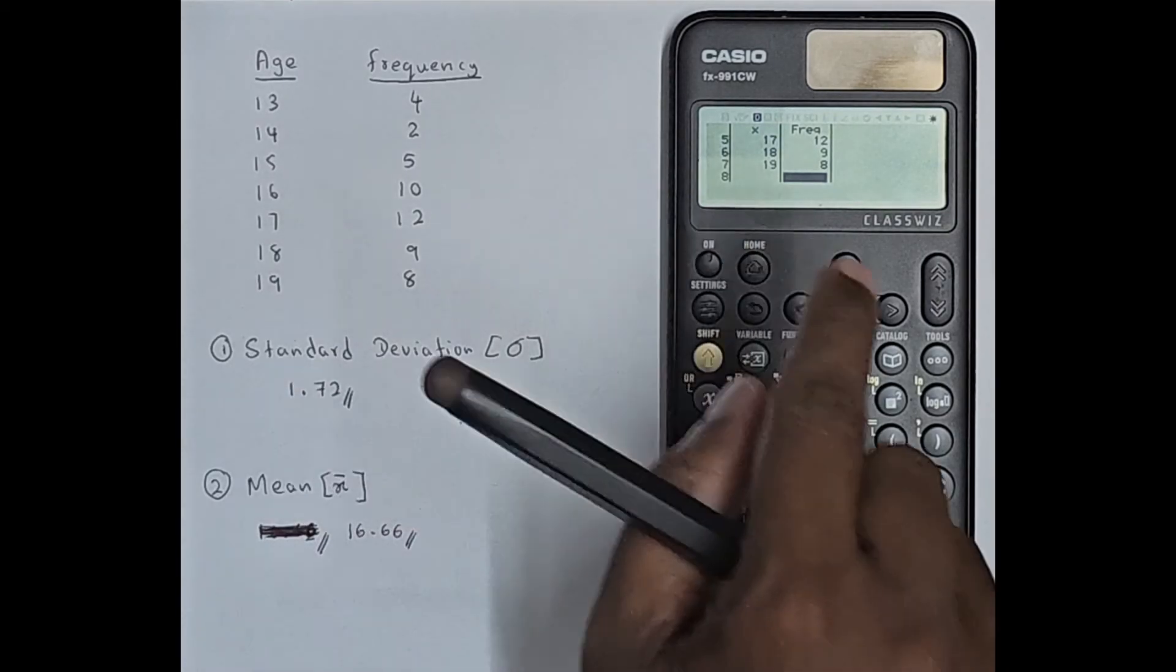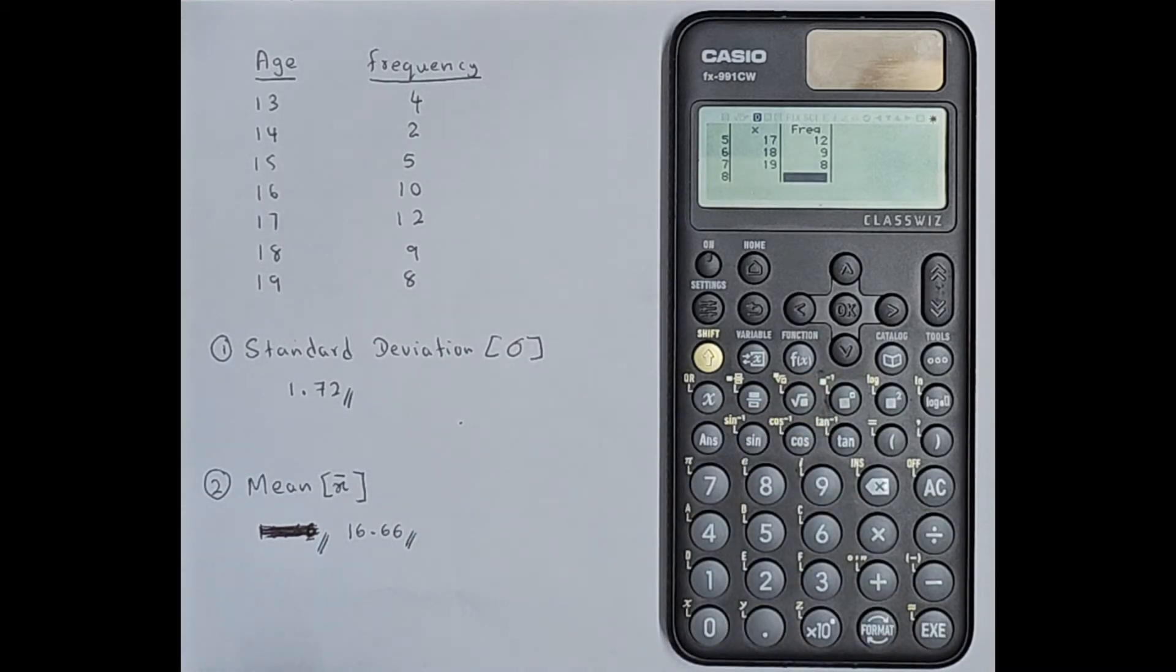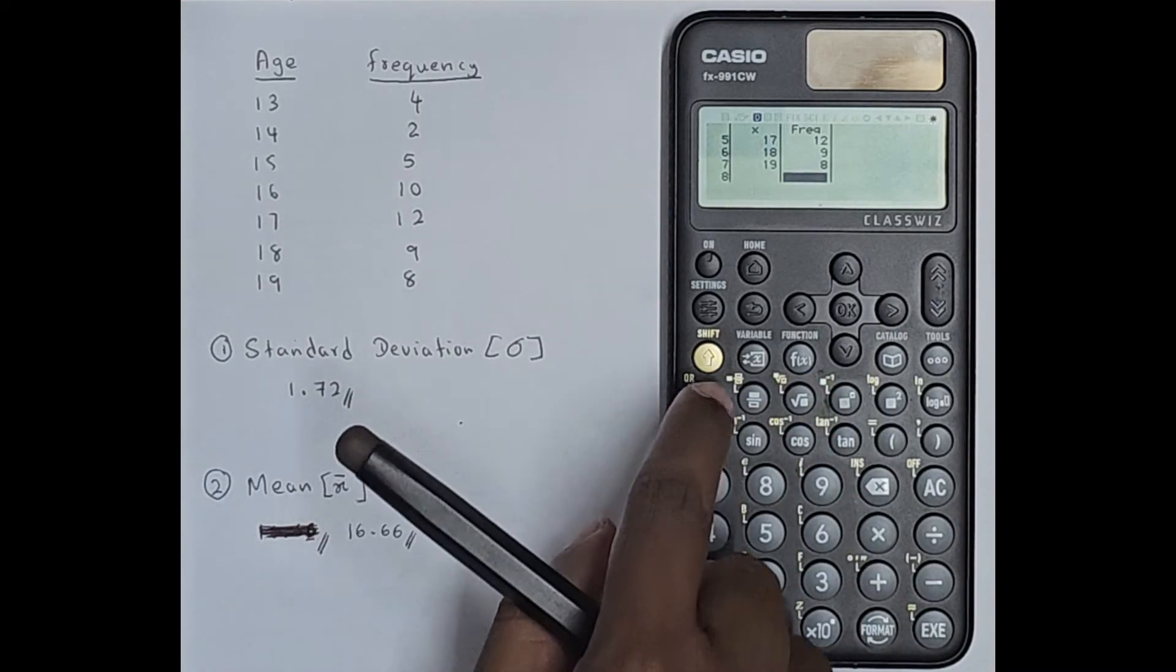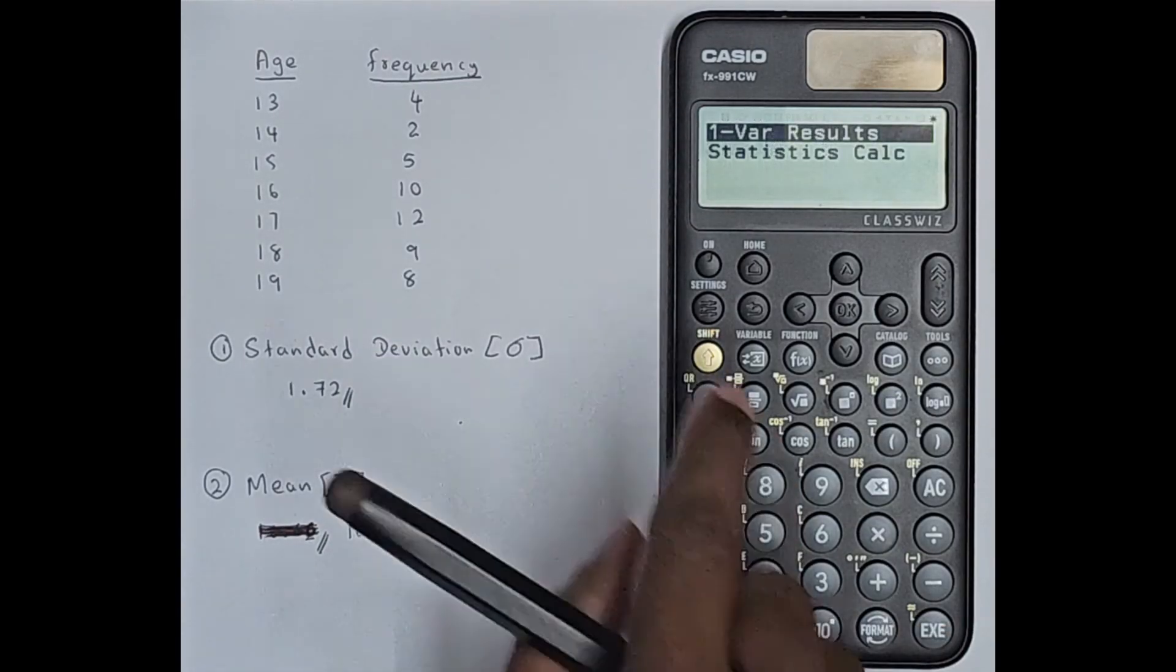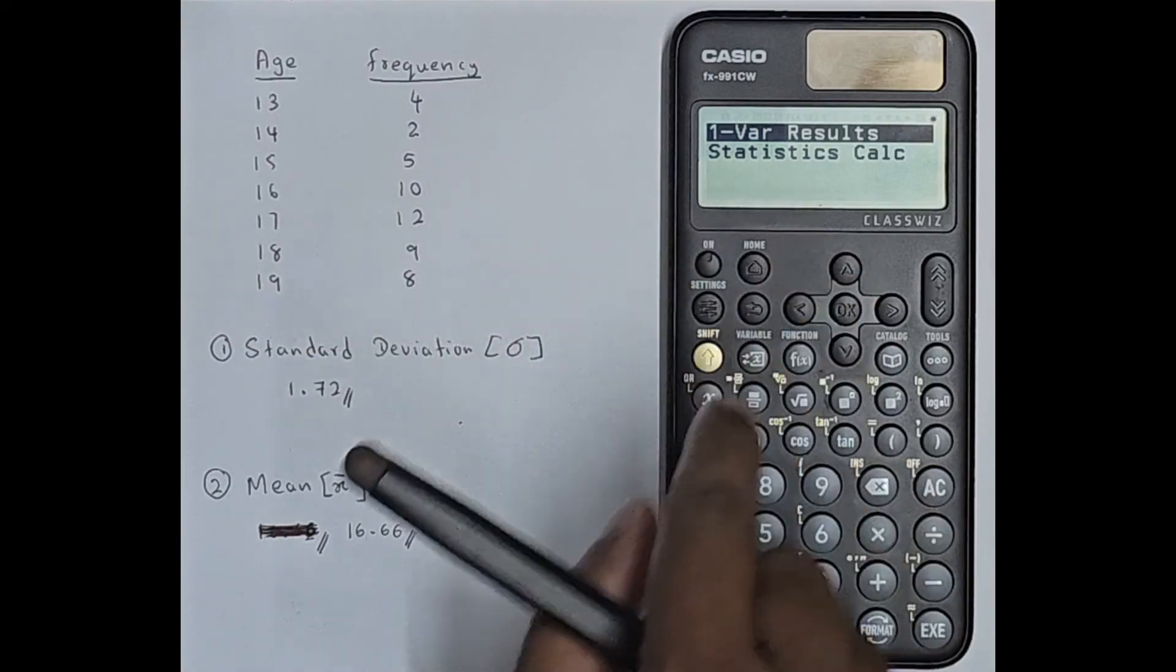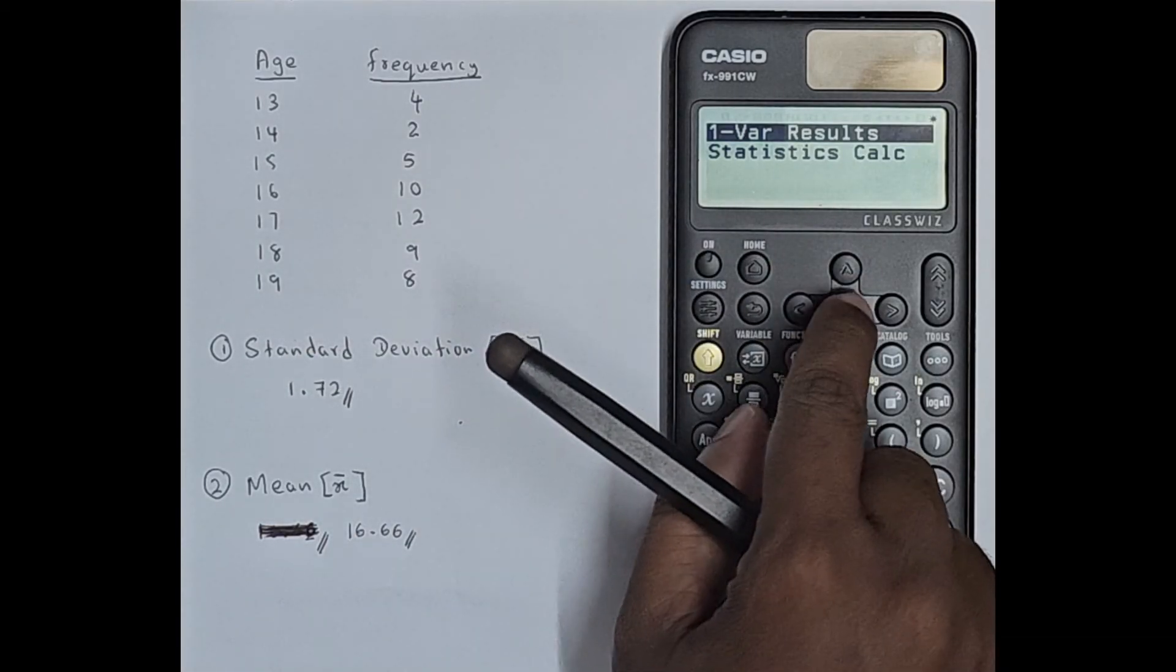So now we have entered everything into the calculator. Next what you should do is press this shift button then again press this exe, then you can see one variable result. So click OK.